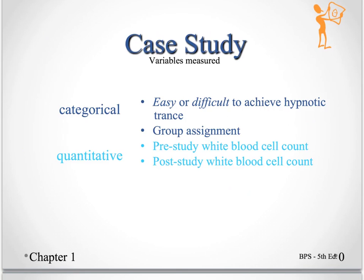So what variables did we measure here? Well, easy or difficult to hypnotize was one of the variables. That's categorical. It puts students into the category. Either they're in the category that they're easy to hypnotize, or they're in the category that they are difficult to hypnotize.